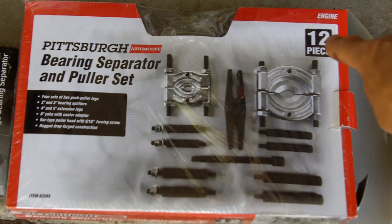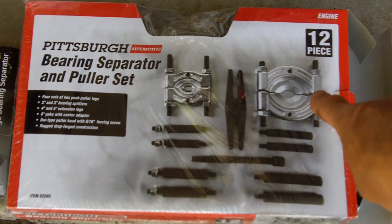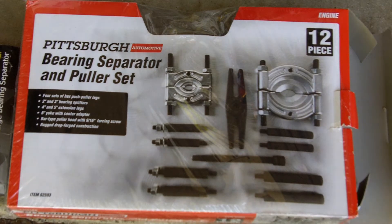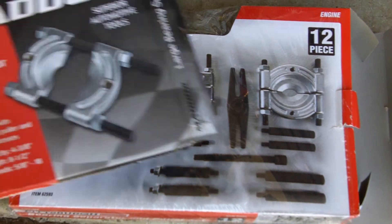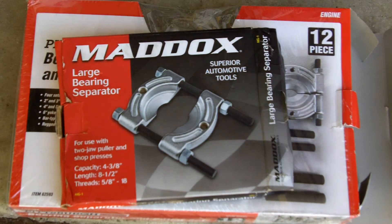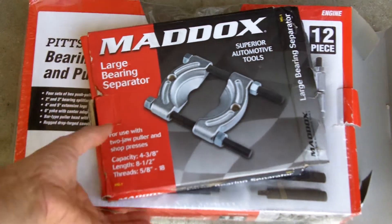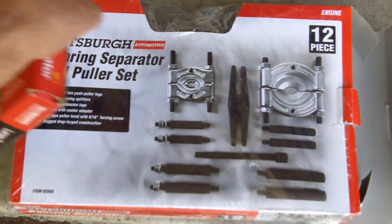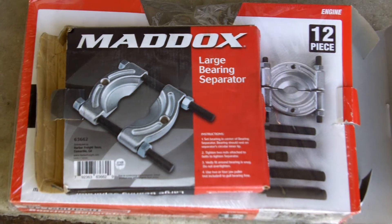The only thing is this larger bearing separator would not fit around the shaft. So I ended up buying this Maddox one that is bigger and fit around it better. The Maddox item number is 63662.